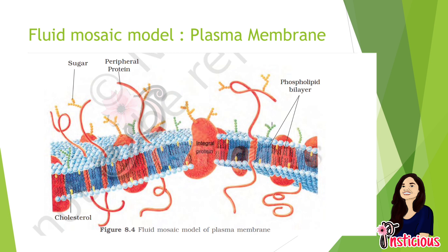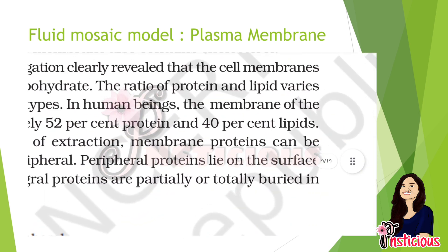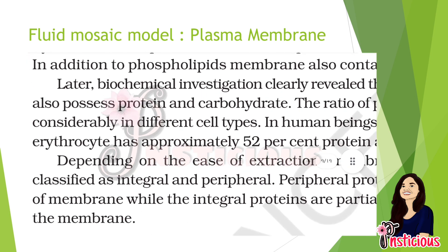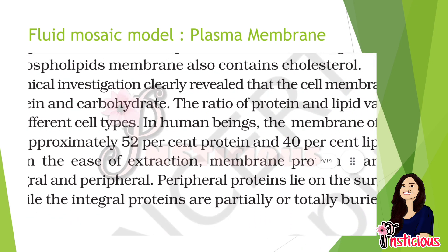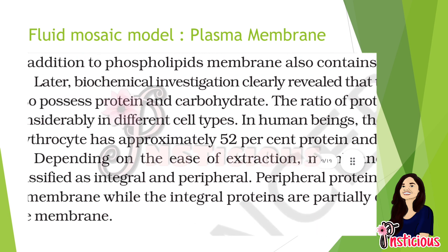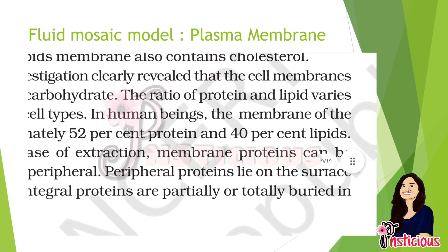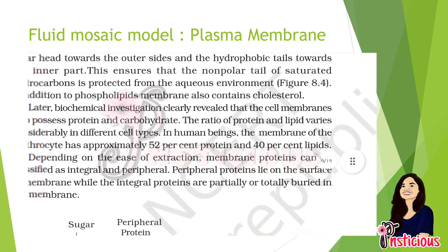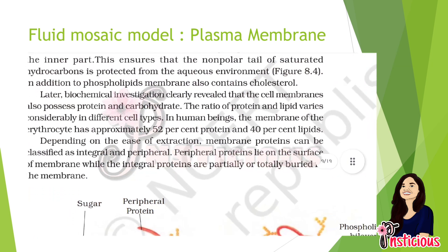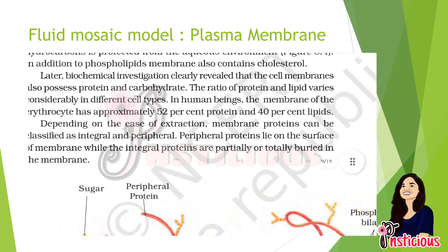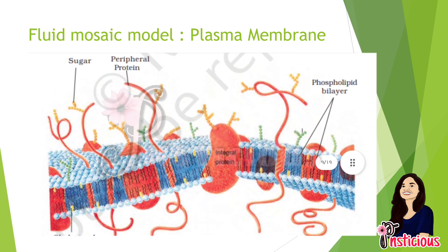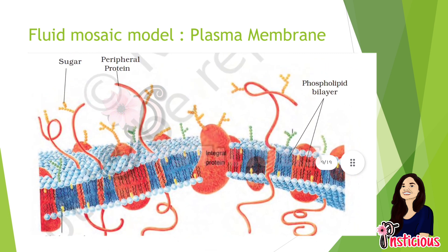The cell membrane also contains some cholesterol as a lipid component. Phosphoglycerides possess proteins and carbohydrates. In RBCs or erythrocytes, it is approximately 52 percent protein and 48 percent lipid. According to the ease of extraction, membrane proteins are known as integral or peripheral. The phospholipid bilayer shown in the labeling is a conjugated lipid.